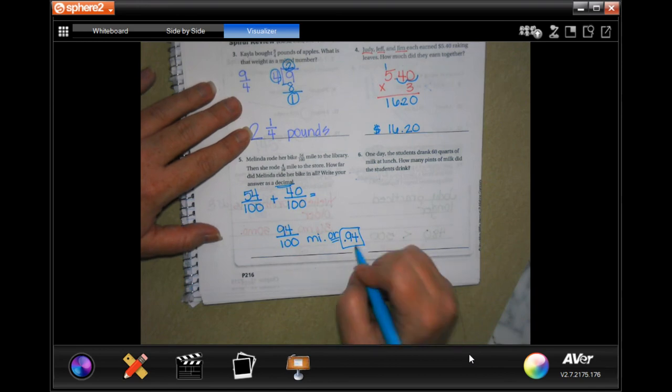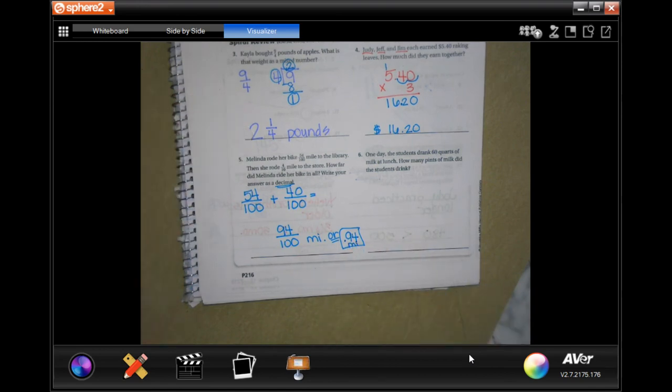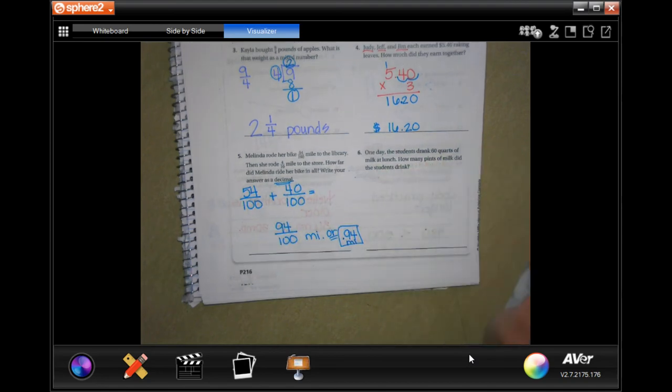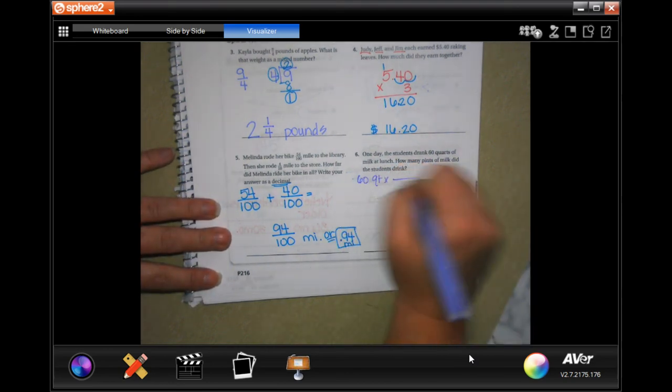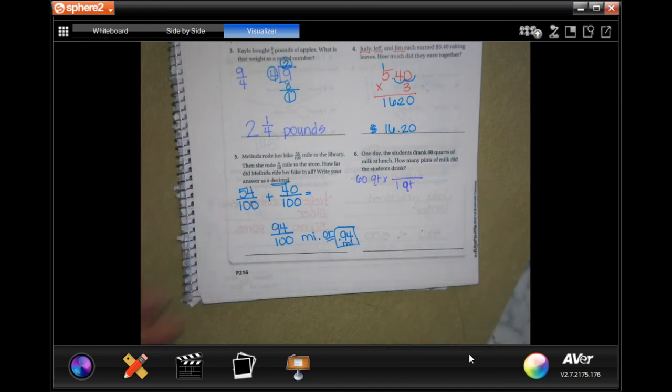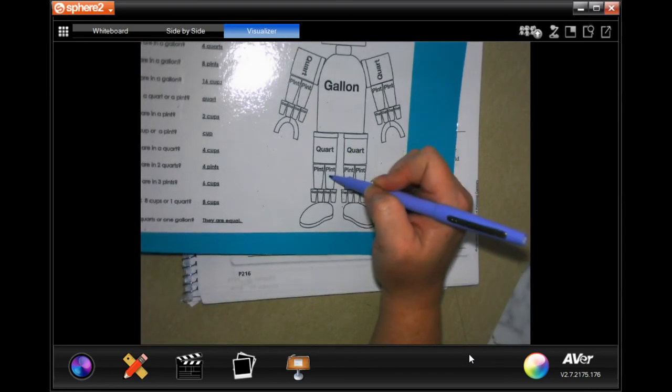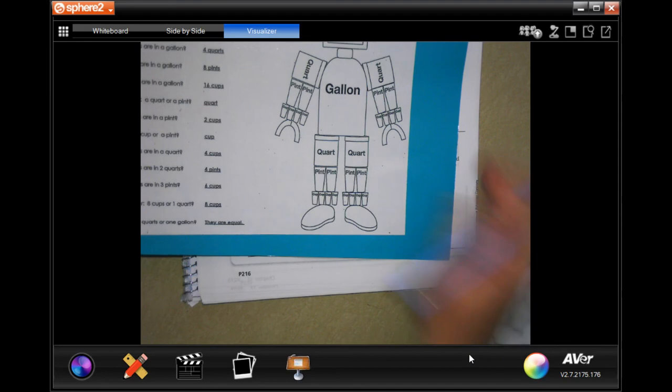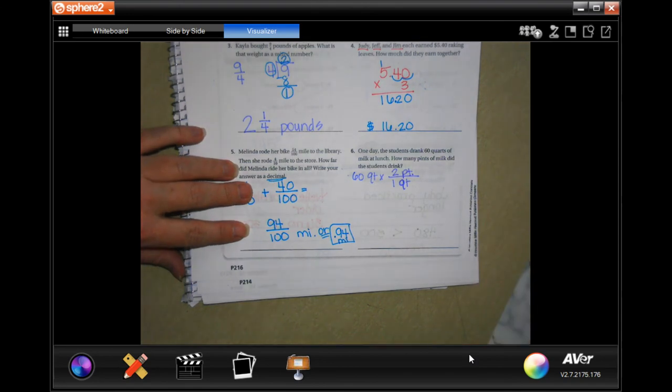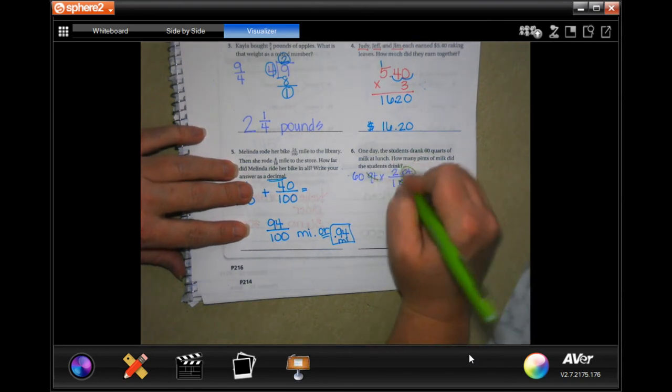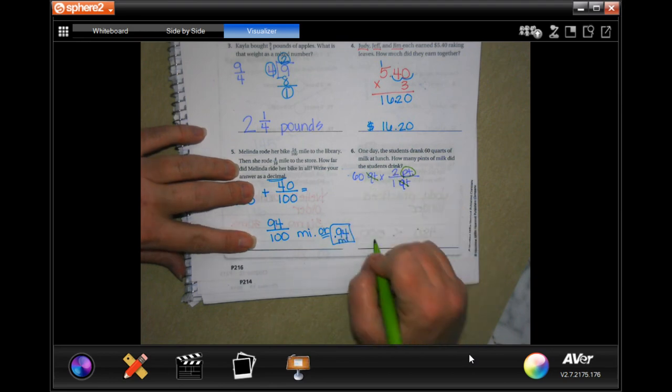One day the students drank 60 quarts of milk at lunch. How many pints of milk did the students drink? So 60 quarts, and in one quart, how many pints are in one quart? Let's check our chart. There's a quart, there's one two pints. Now we cancel out our quarts, we're left in pints, that's good. Two times six is 12, and then I have a zero to add on, 120 pints.